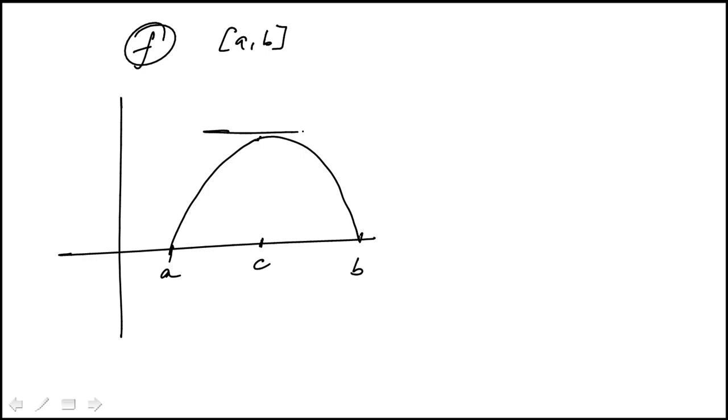And then at c, the derivative or the slope of the tangent line is 0, which means we have a horizontal line.